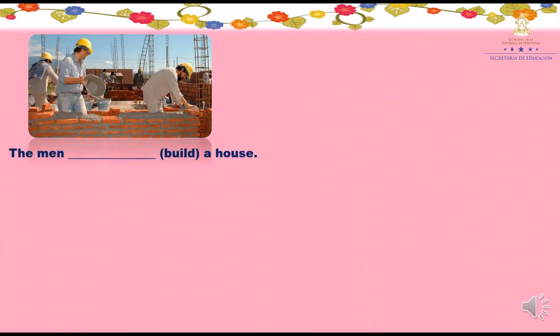The next: The men ___ (build) a house. ¿Cómo nos quedaría la respuesta si hablamos de los hombres? Were building. The men were building a house. ¿Por qué were? Porque estamos hablando en plural. Y al verbo build solo le agregamos -ing. Los hombres estaban construyendo una casa.